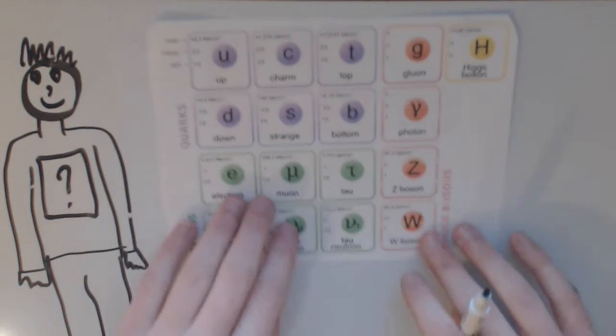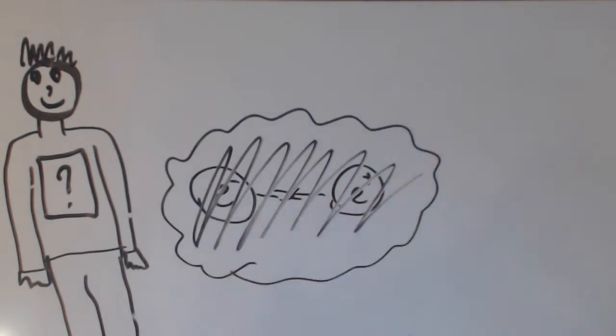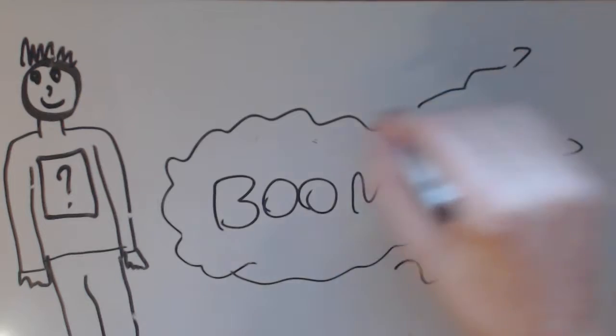To further complicate the standard model, each quark and each lepton has a corresponding antiparticle that has the opposite electrical charge. The electron has the positron. When a particle, antiparticle pair meet, they annihilate, creating gamma rays.